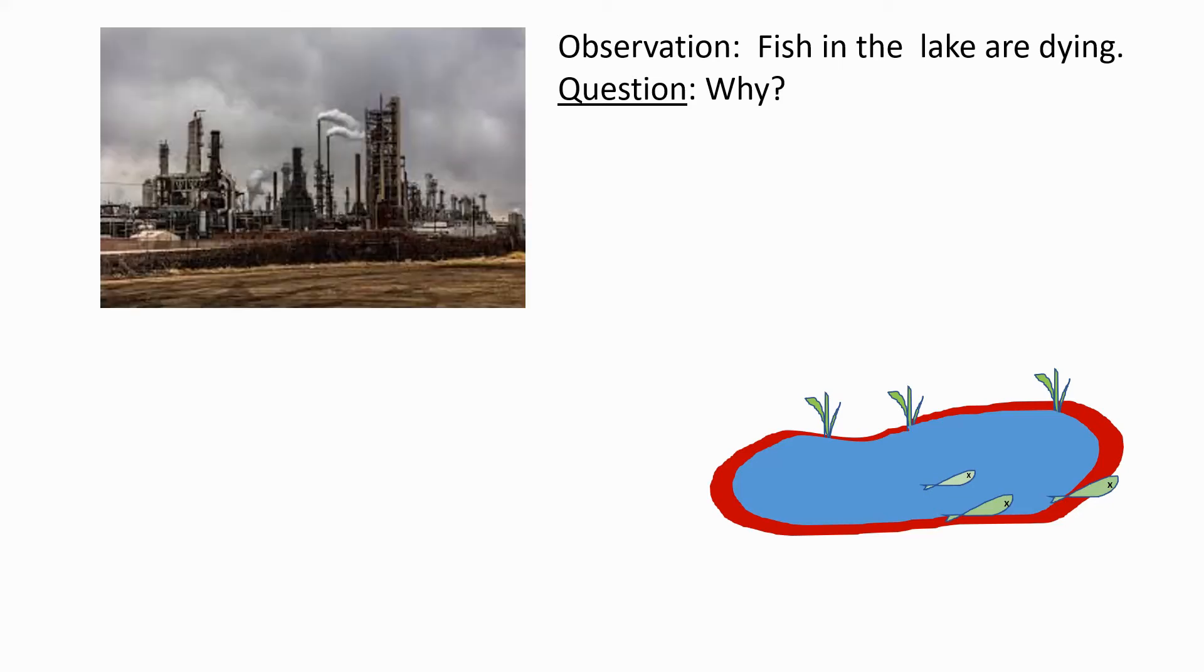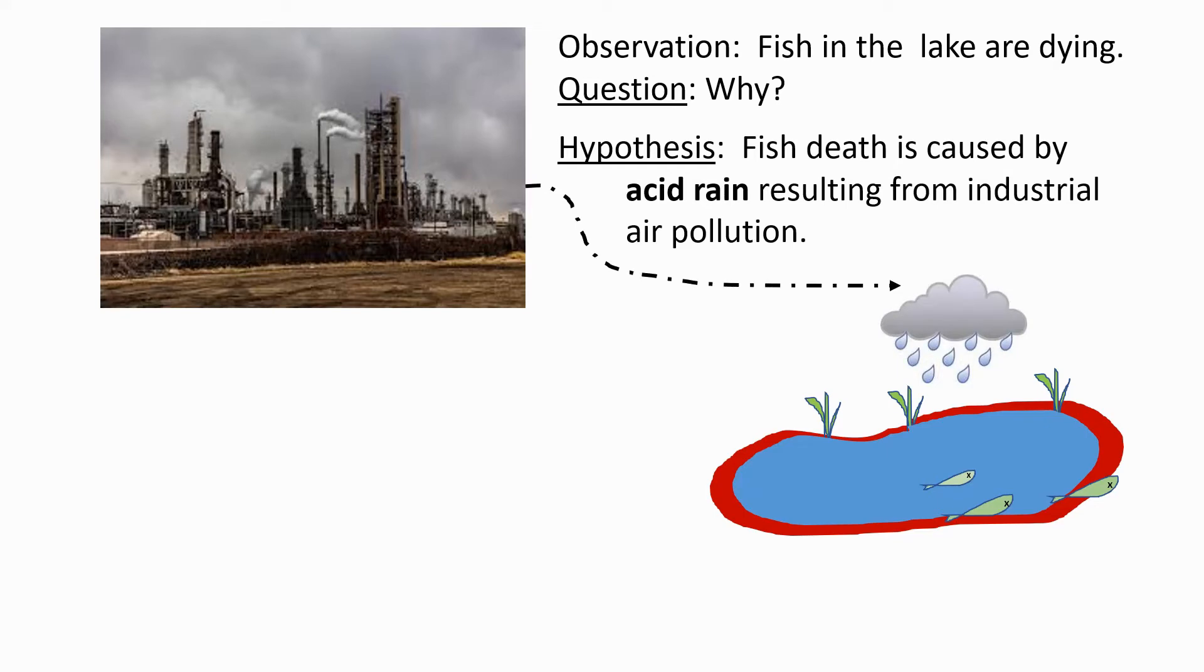Let's consider an example of a hypothesis. Say there's a lake nearby and one day you notice that fish in the lake are dying. And this raises a question of why. On thinking about it, you realize there's a state nearby where there's a lot of heavy industry and you formulate the hypothesis that the fish death is caused by acid rain resulting from industrial air pollution. Now notice what a really very complex idea this is. It's a hypothesis that makes many predictions and you cannot test it directly by doing any single test. For example, it predicts that the material going up the smokestacks into the sky forms acid rain in the clouds, that the prevailing winds blow the clouds over the lake, that enough rain falls from the clouds to change the pH in the lake, and so on.